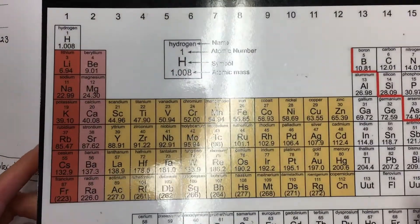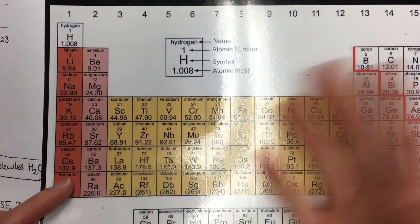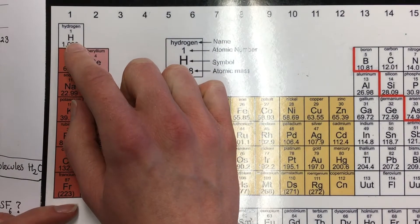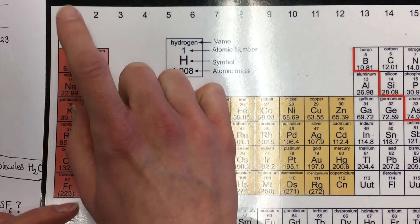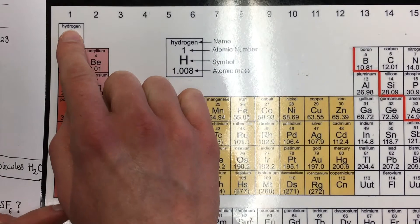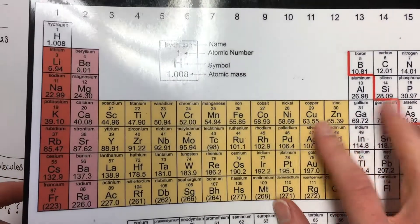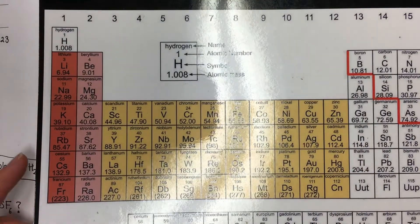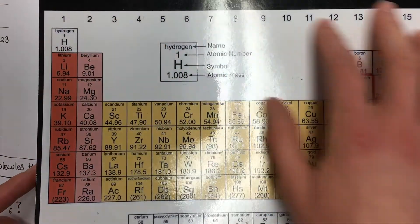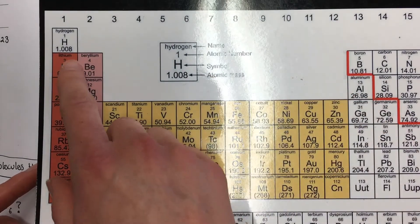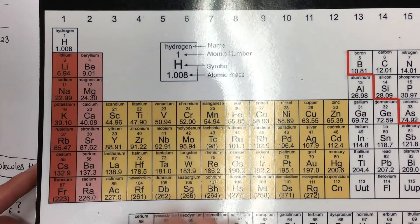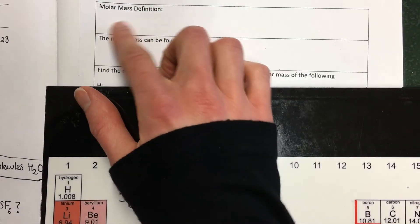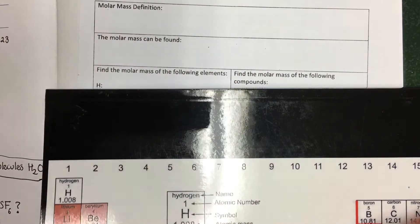Different elements on the periodic table have different weights. So if I had a mole of hydrogen, so 6.02 times 10 to the 23rd hydrogen atoms, that would be a lot lighter than if I had a mole of iron. Because iron is heavier, it's got 26 protons, hydrogen only has one. Each element on the periodic table has its own individual atomic mass, average atomic mass. It also has its own individual molar mass, which is the mass of one mole of that element.